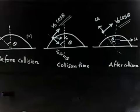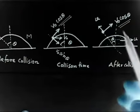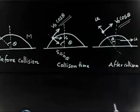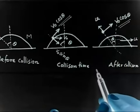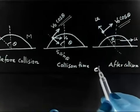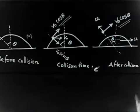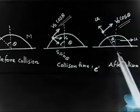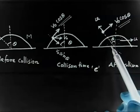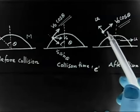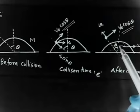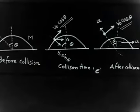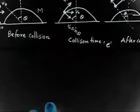Now let us write and solve this. We have two unknowns: v and U. We can write one equation using the coefficient of restitution E. In the perpendicular direction, velocity of approach times E equals velocity of separation.